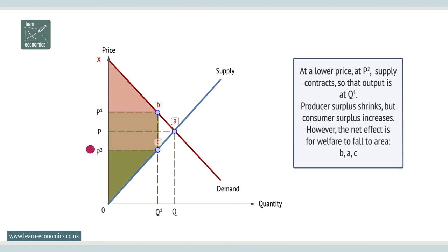At a lower price at P2, supply contracts so the output is at Q1. Producer surplus shrinks but consumer surplus increases. However, the net effect is for welfare to fall to area BAC.